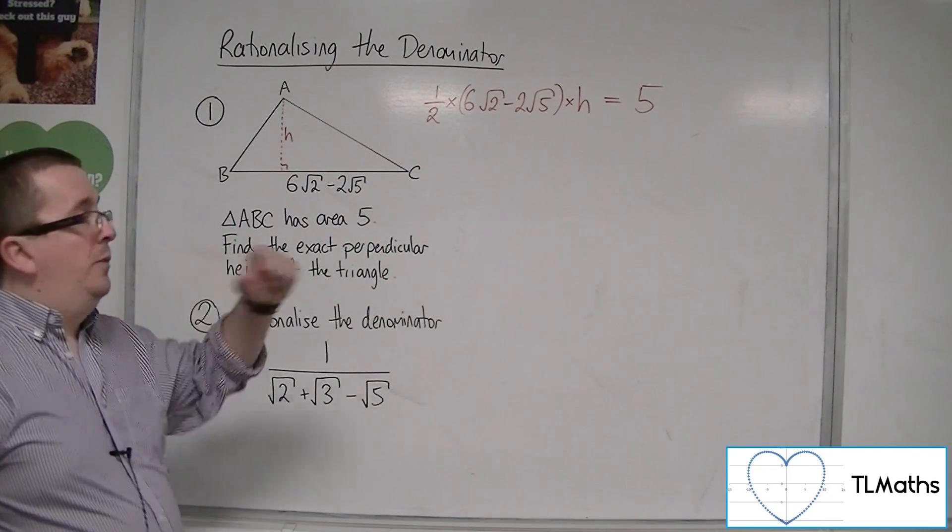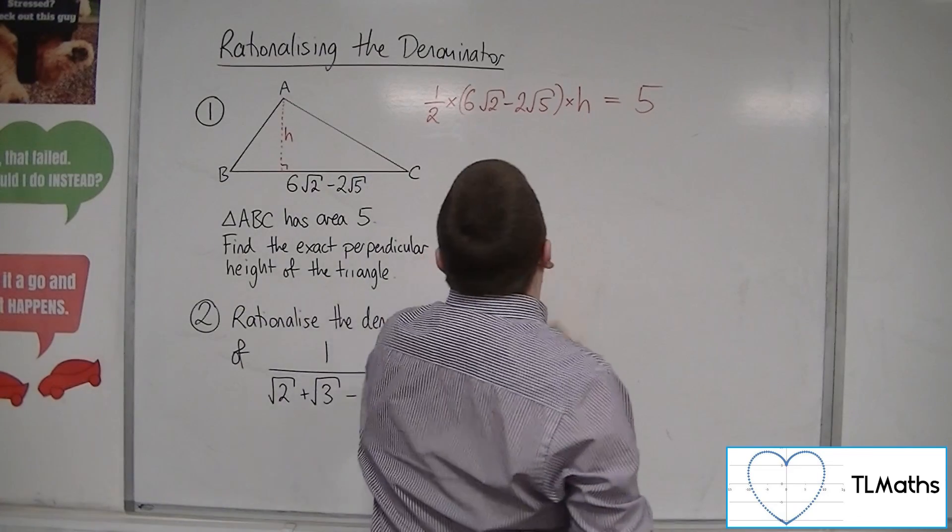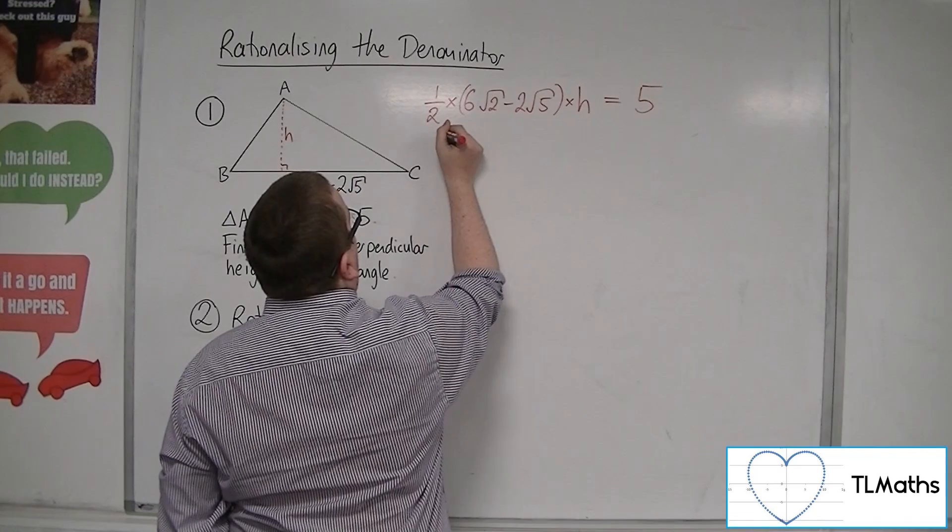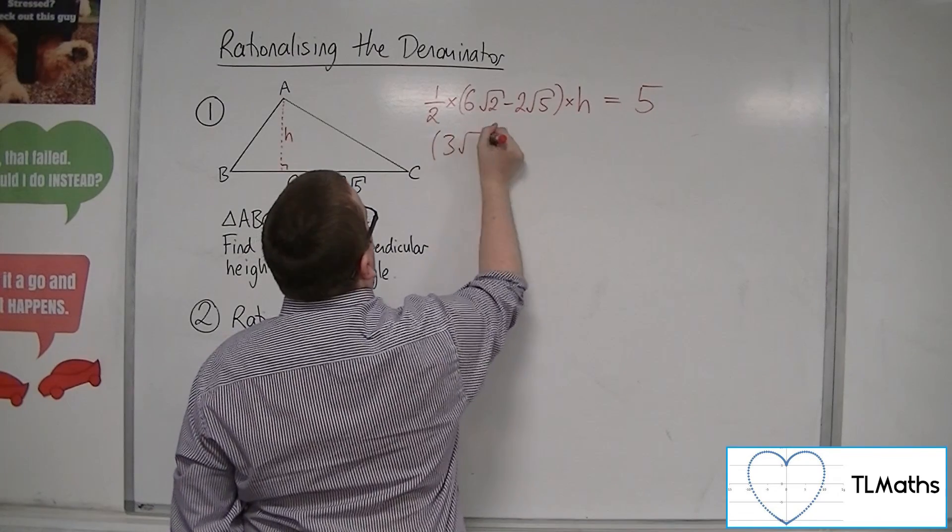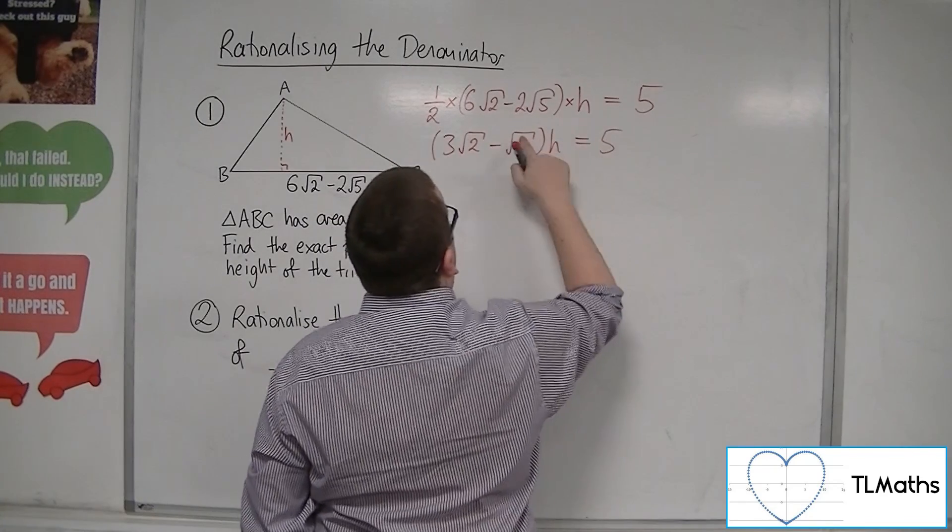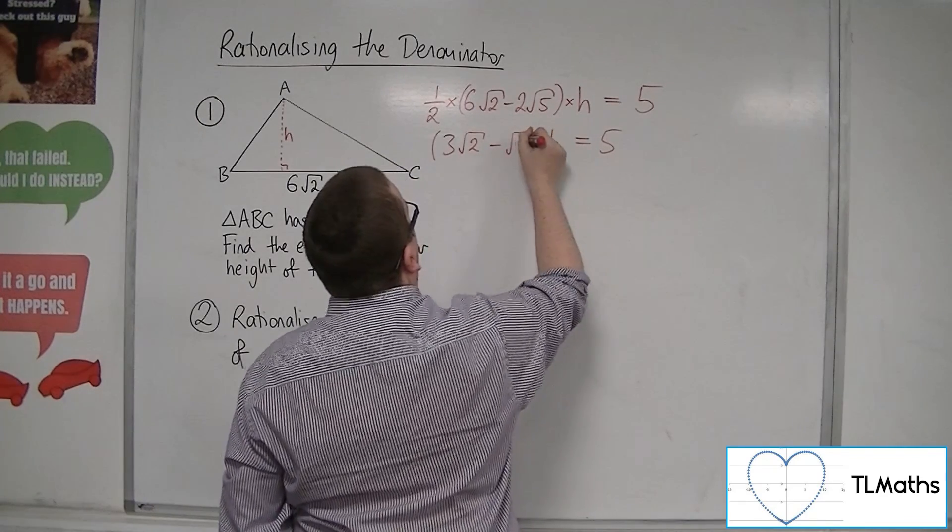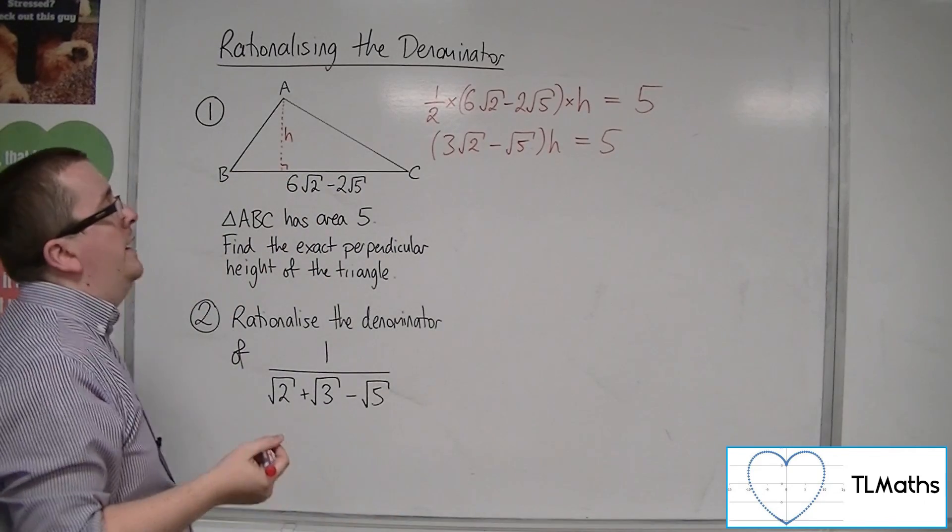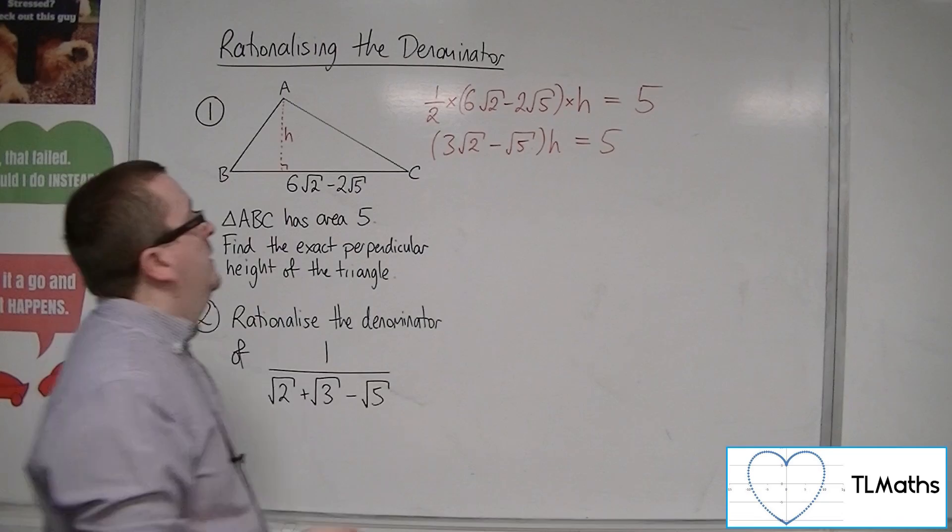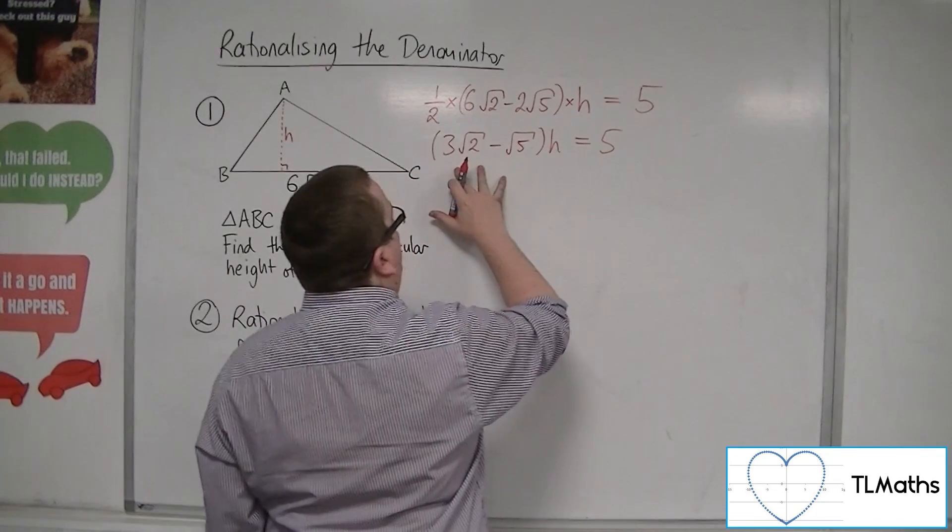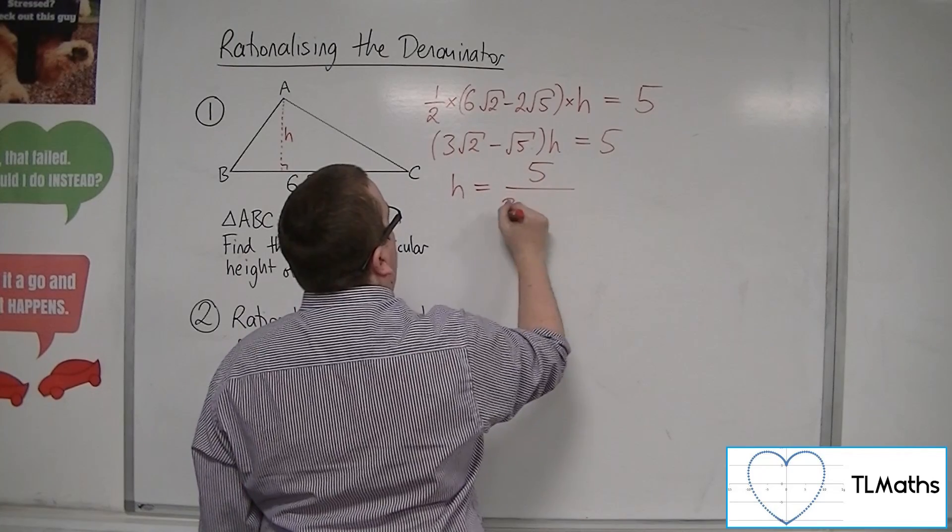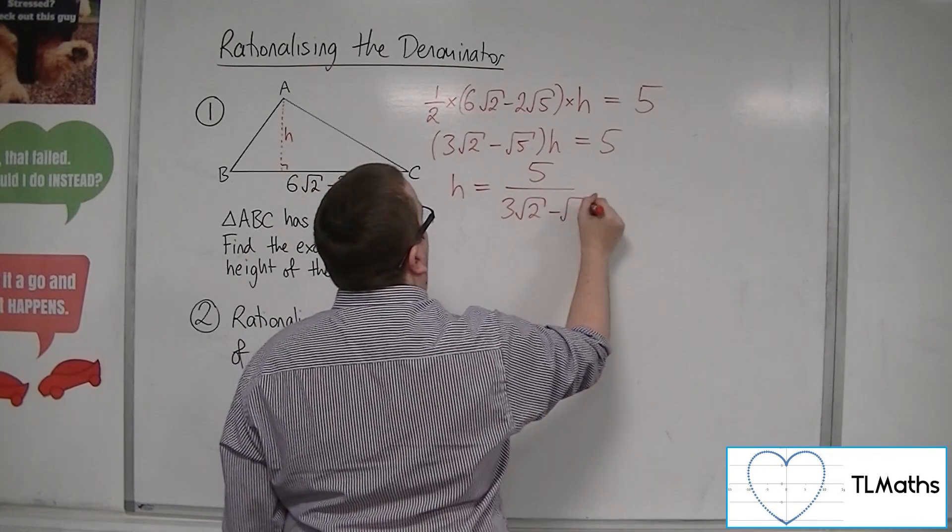So if I multiply this through by half, I would get 3 root 2 minus root 5 h is equal to 5. I could alternatively have multiplied both sides by 2. It wouldn't make any difference to the end result. And then divide both sides by that bracket and I would get 5 over 3 root 2 minus root 5.